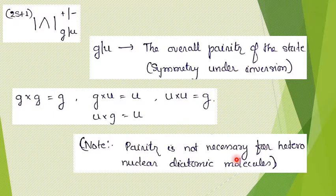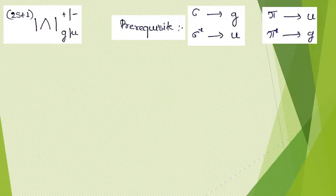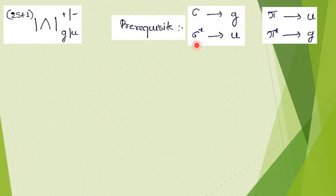This G/U parity is not necessary for heteronuclear diatomic molecules. When writing the term symbol for homonuclear diatomic molecules like O₂, H₂, He₂ it is relevant, but for heteronuclear molecules like NO or CO it is not necessary to write this. Regarding the orbital parities: sigma bonding molecular orbitals are G; sigma-star is U; pi bonding molecular orbitals are U; and pi-star anti-bonding molecular orbitals are G.